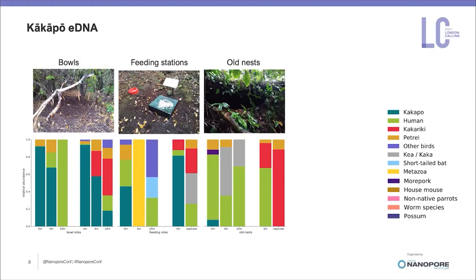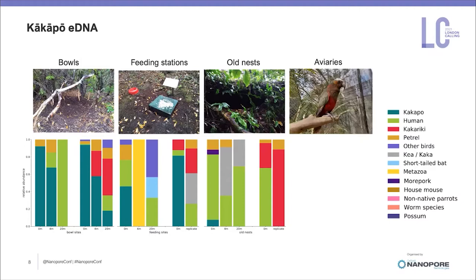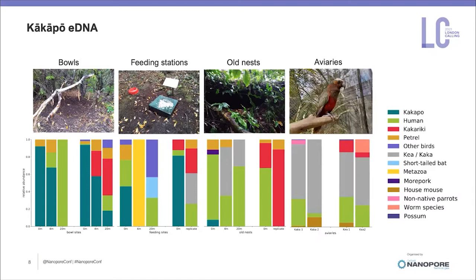To assess whether we would be sensitive enough to find kakapo DNA without mixing it up with close relatives — the kea and the kaka — I also sampled aviaries in the Dunedin Botanic Garden. I confirmed we found evidence of kea and kaka DNA, but no evidence of kakapo DNA. In the aviaries we also found DNA of mice, possums, and exotic birds known to occur in the Botanic Garden but not at Whenua Hou — really showing that this eDNA process is working nicely.